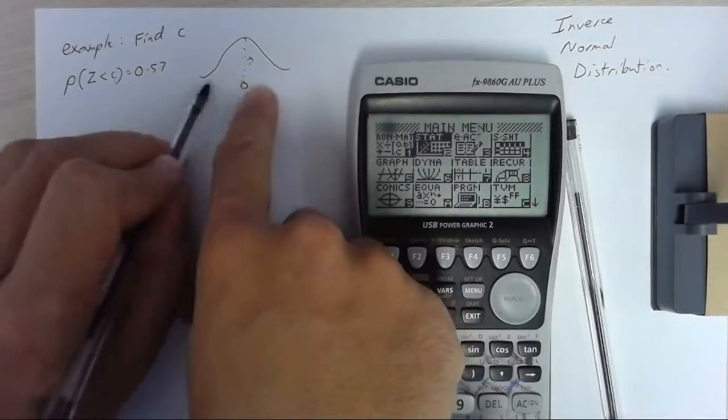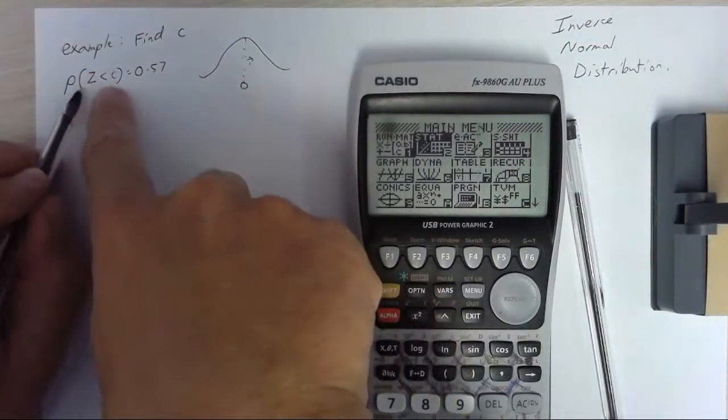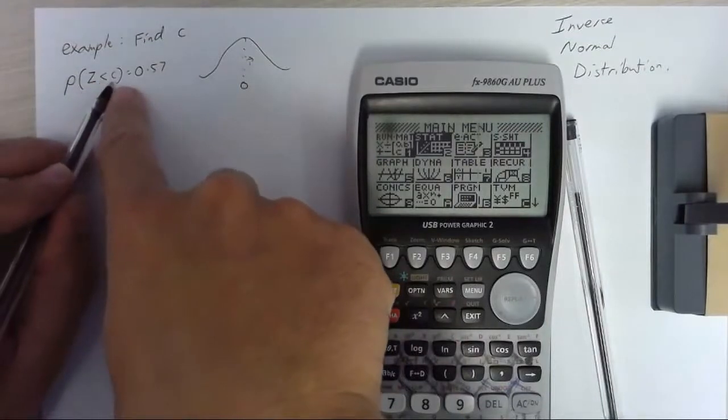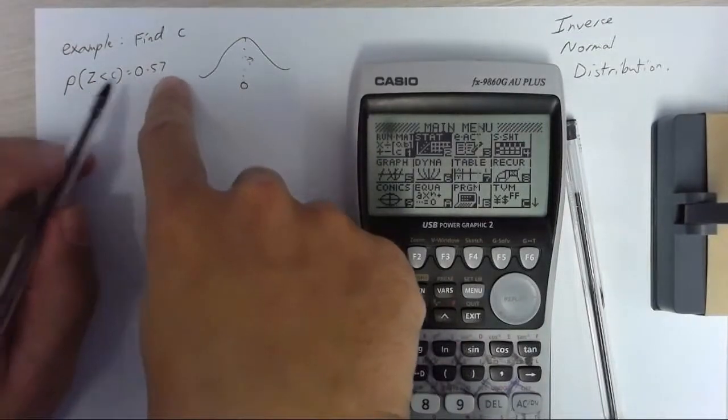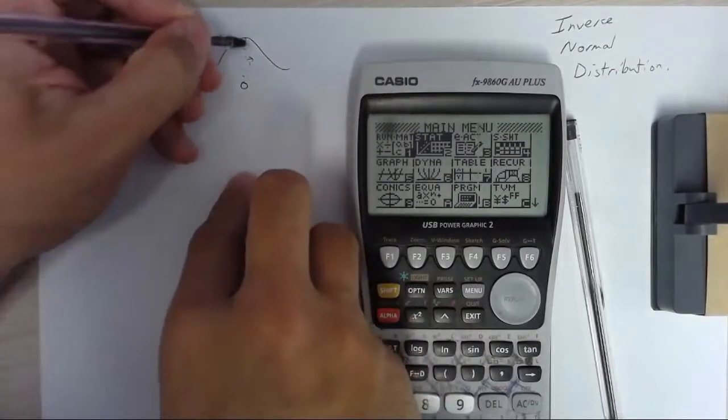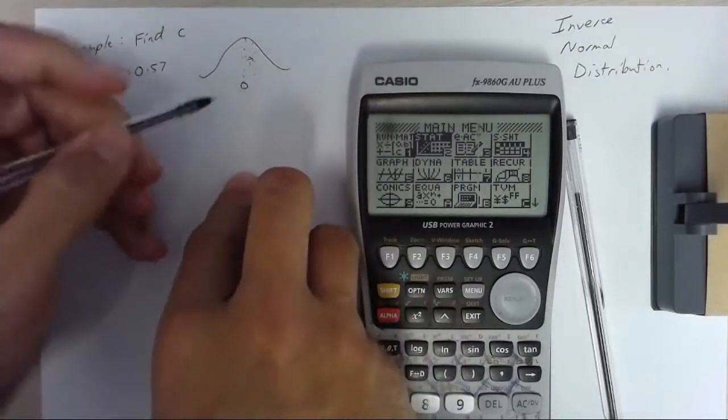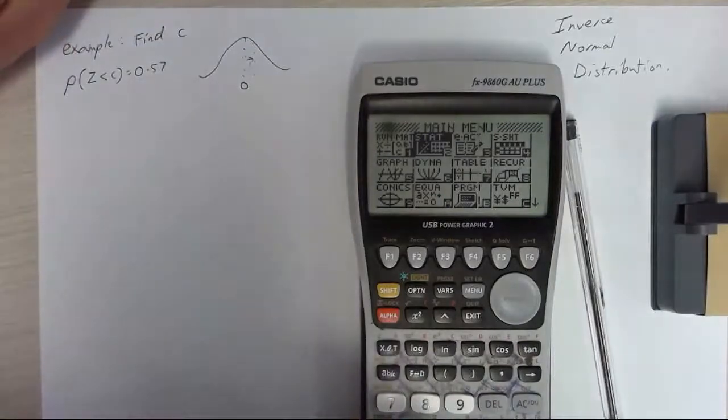Z less than 0, the probability that z is less than 0 is equal to 0.50. The fact that it's more than 0.57 means that it's more like about there somewhere. I'll just color that in.